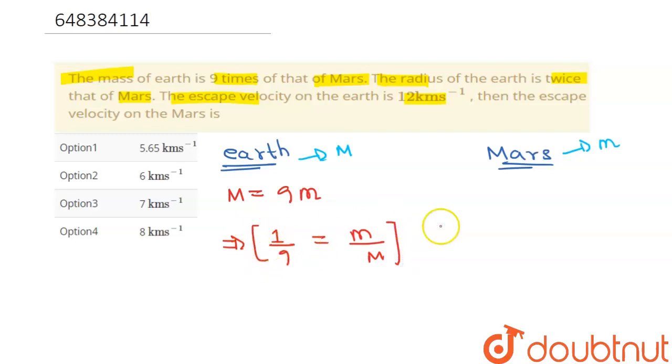Now also the radius, we are taking the radius of earth as capital R and for Mars small r. The relation is given to us that capital R is equals to twice of small r. Just pay attention so that we don't get confused.